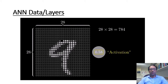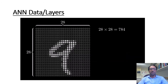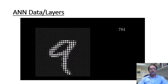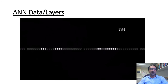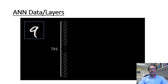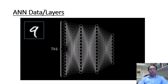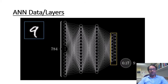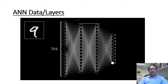This number inside the neuron is called its activation. Each neuron is lit up when its activation is a high number. All 784 neurons make up the first layer of our neural network, as you can see in the slide. Jumping over to the last layer, this has 10 neurons each representing one of the digits. The activation in those neurons — a number between 0 and 1 — represents how much the system thinks that a given image corresponds with the given digit. There are also a couple of layers in between called the hidden layers.